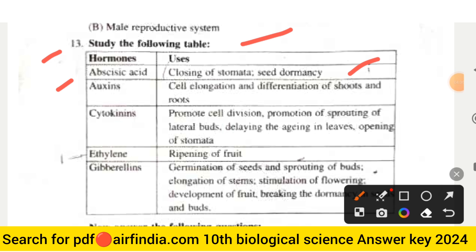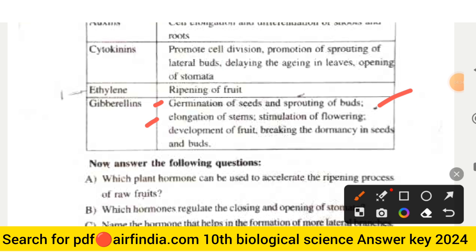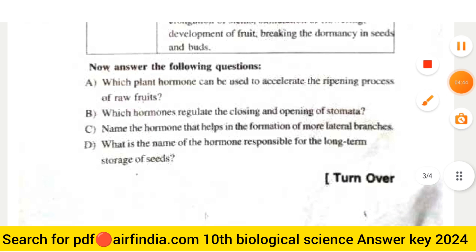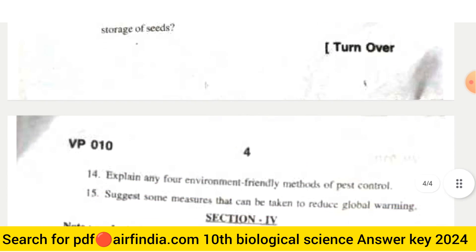From the table: ABA causes closing of stomata and seed dormancy; auxins cause cell elongation and differentiation of shoots and roots; cytokinin promotes cell division, sprouting of lateral buds, and delays aging in leaves; ethylene causes ripening of fruit; gibberellin causes germination of seeds, sprouting of buds, elongation of stems, stimulation of flowering, development of fruit, and breaking dormancy in seeds and buds. Sub-questions: (a) Which hormone accelerates the ripening of raw fruits? (b) Which hormone regulates closing and opening of stomata? (c) Which hormone helps formation of more lateral branches? (d) What is the hormone responsible for long-term storage of seeds?